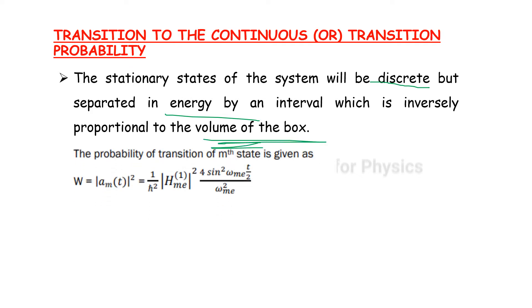Then next, the probability of transition of Mth state is given as, this is very very important. So W is equal to the amplitude |A_M(T)|² is equal to 1 divided by ℏ squared, |H₁^ME|². This equation, the formula, the transition probability per unit time is given by the equation.